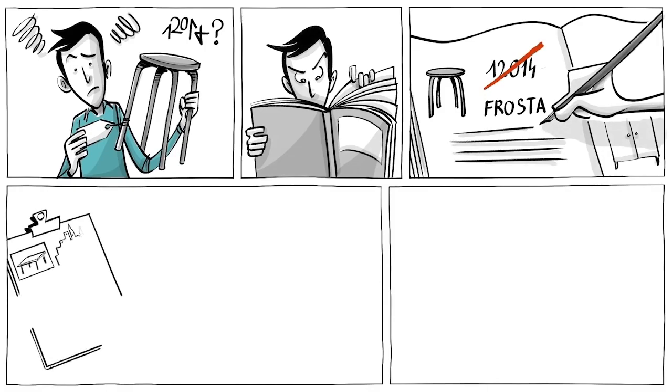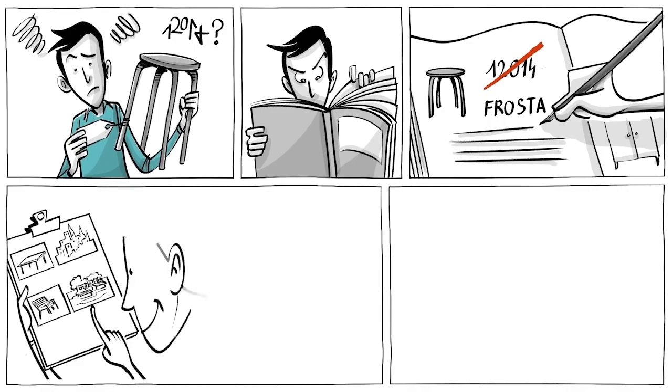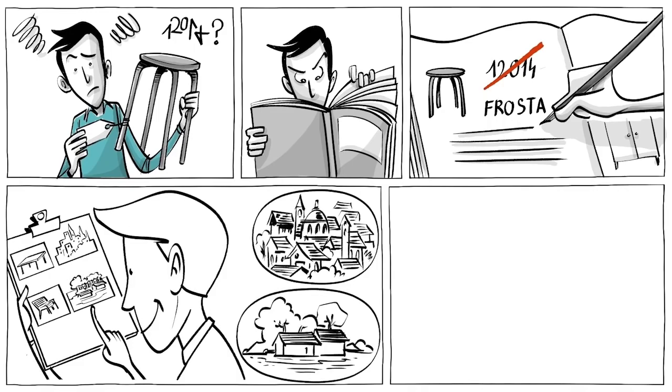Tables were named after places, garden chairs after islands. Now, Ingvar was able to remember and visualize each product.